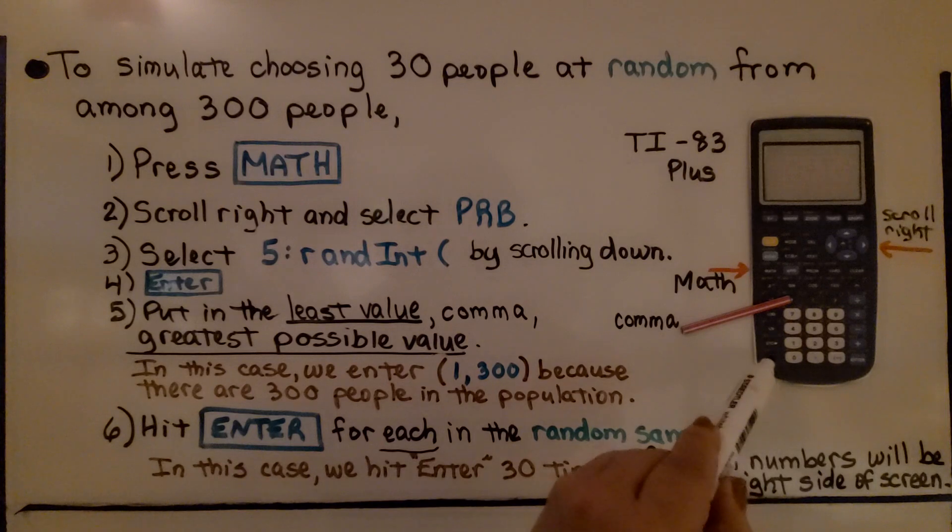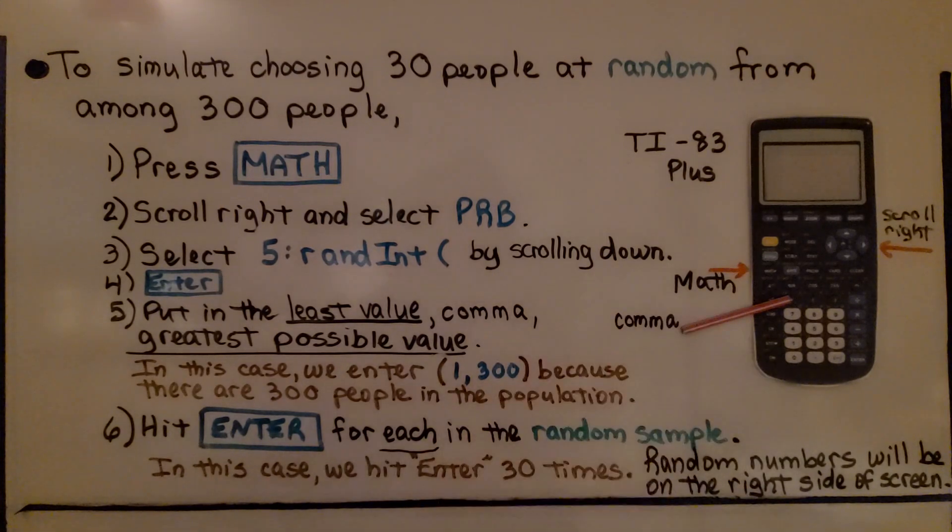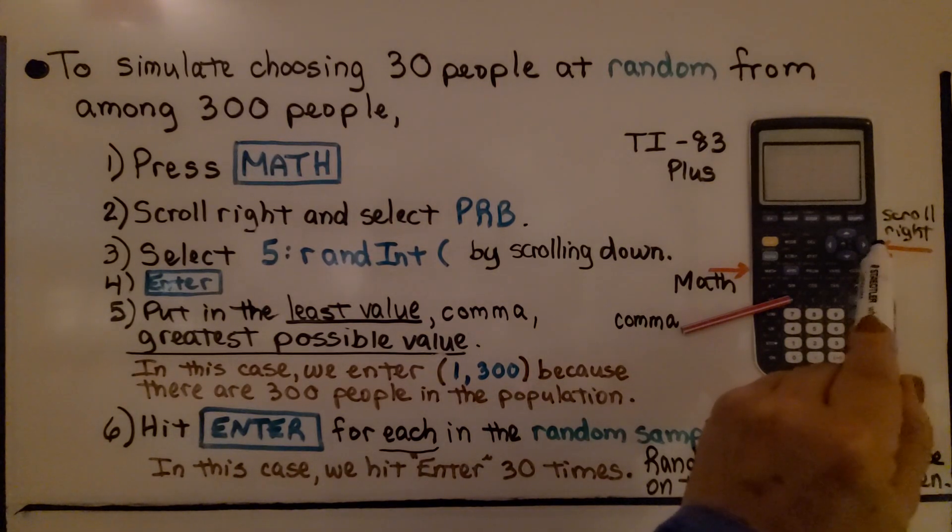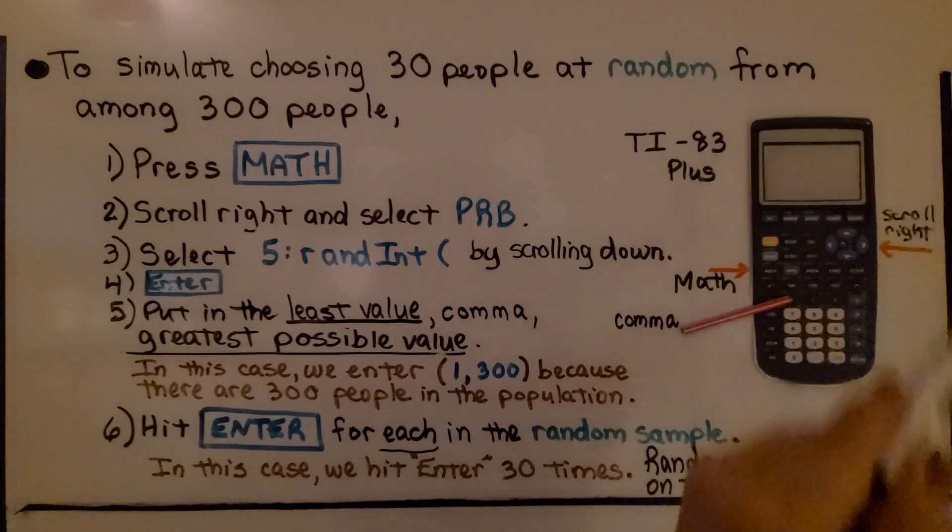The first thing we do is turn it on, here's the On button. Then we push the Math button, that's right there. Then we're going to scroll right and select PRB. We can use this button right here. We're going to scroll to PRB, that's on the right side there.